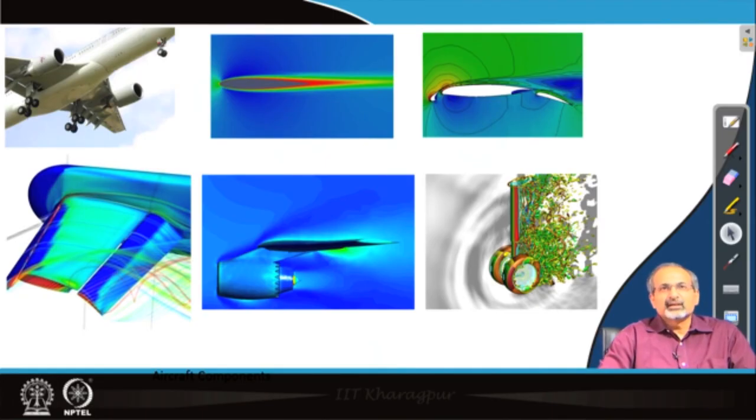Now, let us have a look at a few pictures, where we see different aircraft components and how flow is occurring past them. On the top left you see an aircraft flying past you at a multitude and there are so many different components which are visible. There is this long cylindrical body which we call as fuselage, there are wings, there are engines mounted on the wings, there are wheels which are visible, near the wing fuselage junction and things like that.